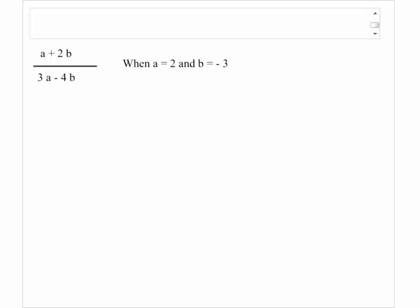Evaluate a plus 2b over 3a minus 4b when a is equal to 2 and b is equal to minus 3.